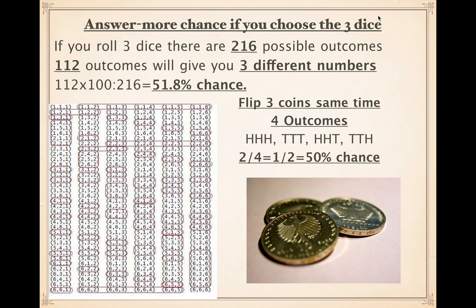There's more chance if you choose the dice. Why? If you roll three dice there are 216 possible outcomes. If you count how many would have all different numbers, there are 112 outcomes. You can check this using the table of all possible outcomes — 112 outcomes are the ones with different numbers, for example two-three-one or two-four-one. This works out to 51.8 percent chance of getting a different number every time you roll three dice.